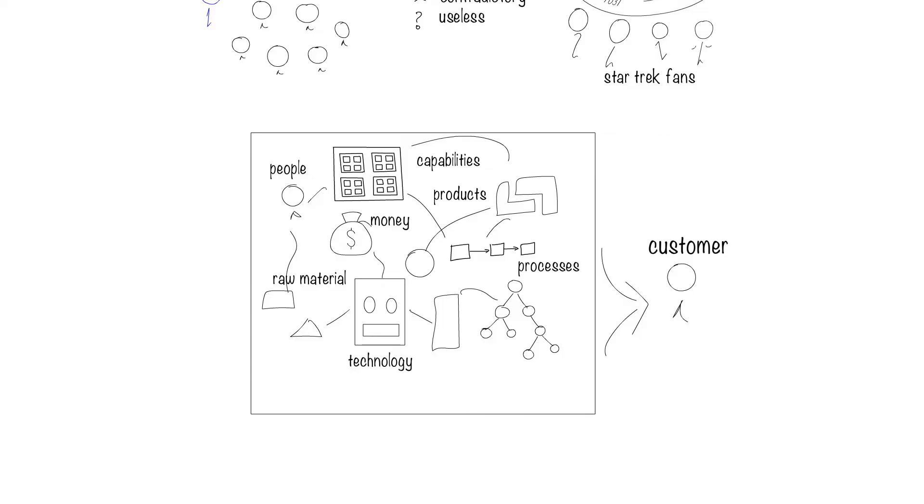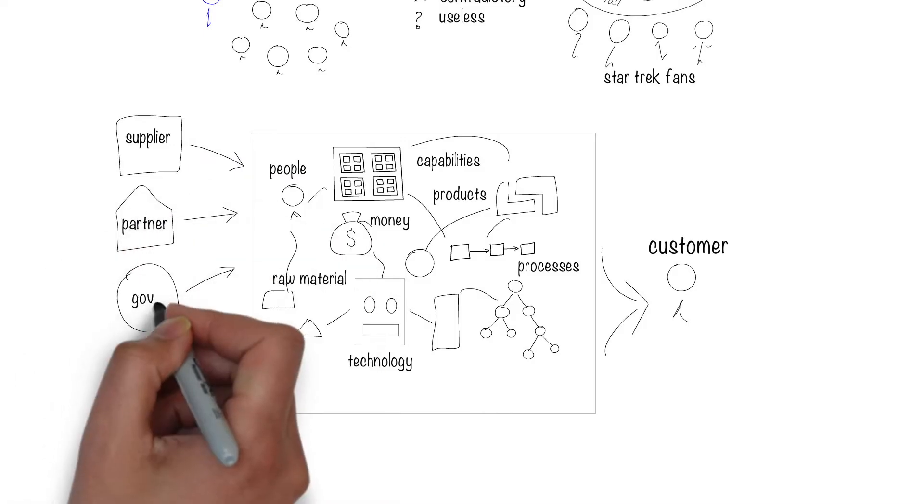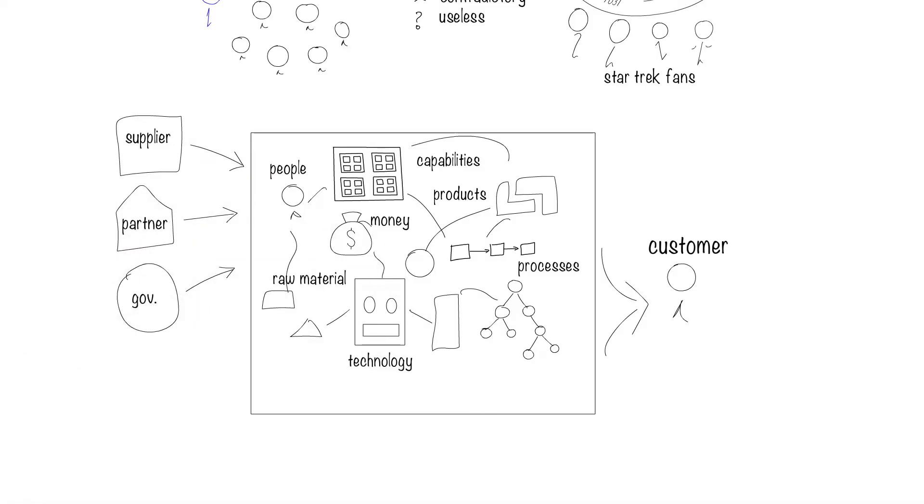The enterprise probably also works with suppliers, partners, the government and other entities to deliver the value that it's supposed to. So entities are inside the enterprise and also outside the enterprise.